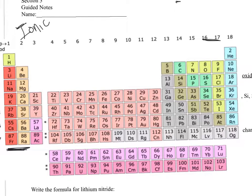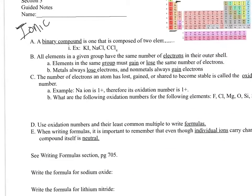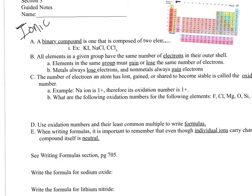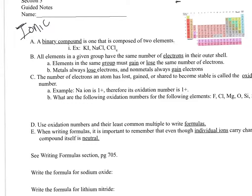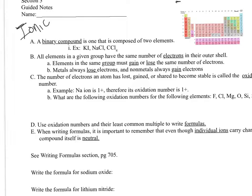That's what we're going to focus on. You might ask, why not group 18? Because group 18 elements already have a full outer shell. So writing ionic compounds is a little trickier, but naming them is easier. Compared to covalent, writing an ionic compound is tougher, but naming them is super easy.